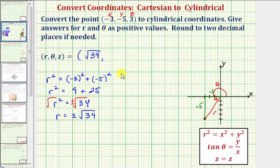Now let's determine angle theta. We know tangent theta is equal to y divided by x, so here we'd have tangent theta is equal to negative five divided by negative three, which equals positive five-thirds. So if tangent theta is equal to five-thirds, then theta is equal to inverse tangent or arctangent of five-thirds.